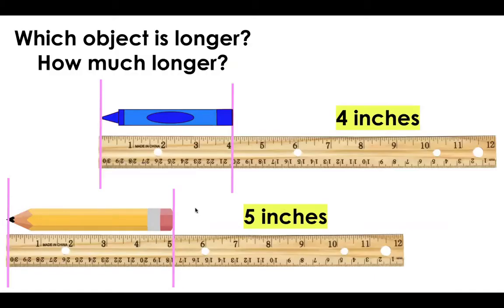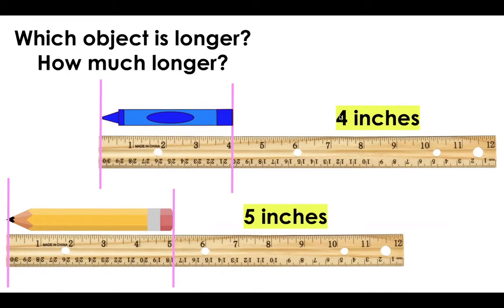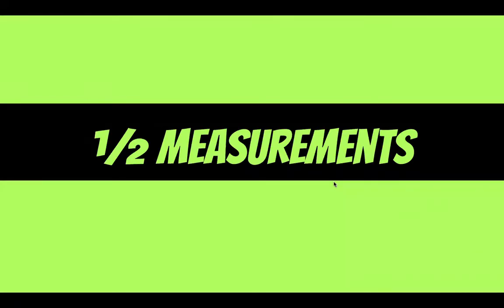I have which object is longer? The crayon or the pencil? My pencil is five inches. My crayon is four inches. So which one is longer? Well I know my pencil is longer because it's five inches and five is bigger than four. How much longer? Well five minus four is one. So the pencil is longer and it is one inch longer.